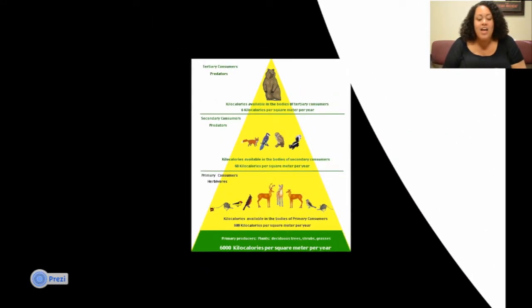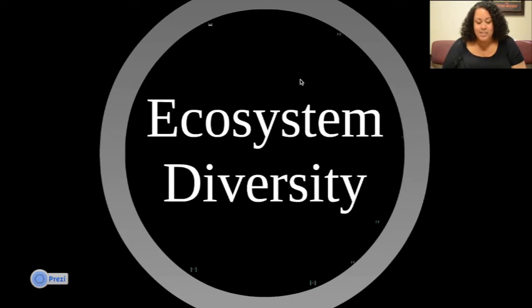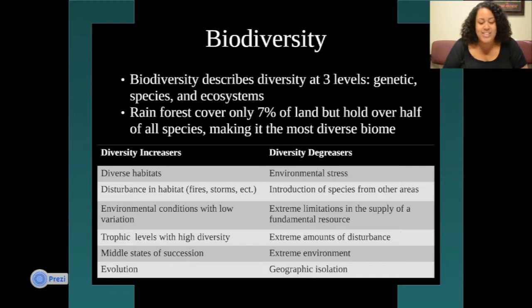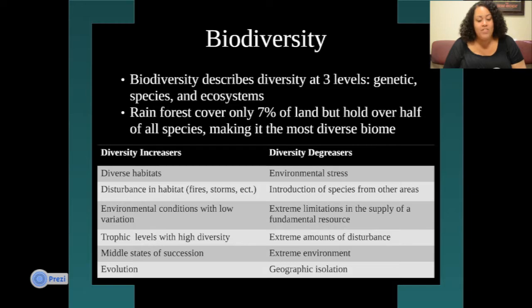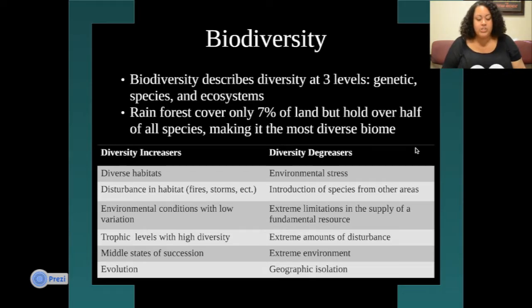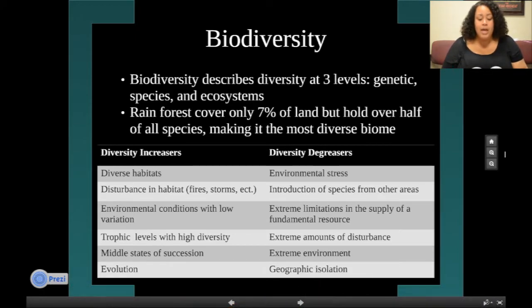Now let's get to ecosystem diversity, starting with biodiversity. Biodiversity describes diversity at three levels: genetics, species, and ecosystems. For instance, rainforests only cover 7% of the land but hold over half of all the species, making them one of the most diverse biomes. Here's a table describing diversity increasers and decreasers. Diversity increasers include diverse habitats, environmental conditions with low variation, higher trophic levels, and evolution. Biodiversity decreasers include environmental stress, extreme limitations to fundamental resources, extreme environments, and geographic isolation.